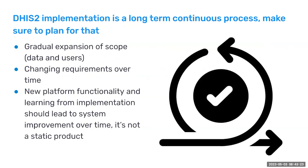One of the key principles is that it's a long-term, continuous process, and you need to plan for that. This means thinking about a gradual expansion of scope — of users and of the data you collect. You cannot do everything at once. It can be good to start a little bit small, master that, make it work, and then gradually expand — maybe including more facilities or adding another data set. But not too small, because you want to get some traction of your DHIS2 work.